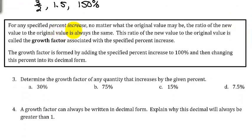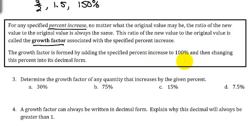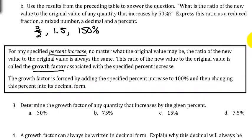For any specified percent increase, no matter what the original value may be, the ratio of the new value to the original value is always the same. This ratio is called the growth factor associated with a specified percent increase. The growth factor is formed by adding the specified percent increase to 100% and then converting that percent to its decimal form. For the problem above, 1.5 is our growth factor.